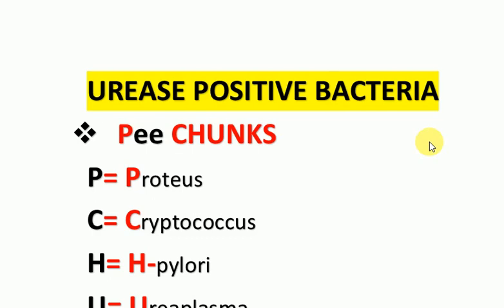Urea's agar is a differential media that is used to test the ability of these organisms. The urease test is positive when the urea is converted into ammonia and carbon dioxide and the colored media changes from yellow to red. Differential media is a media that is used to distinguish closely related organisms or groups of organisms.